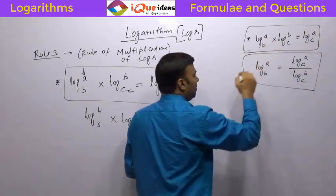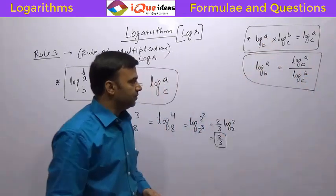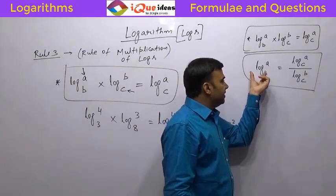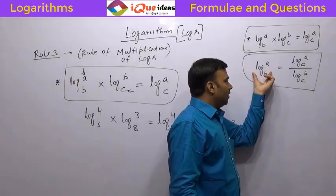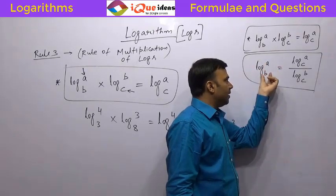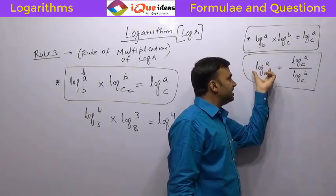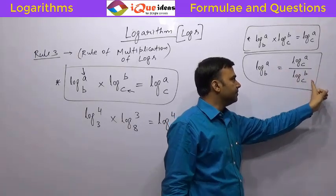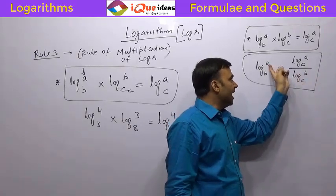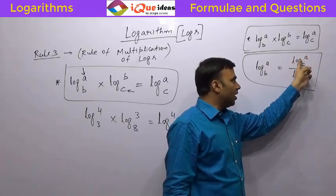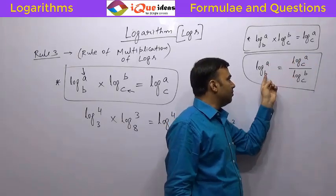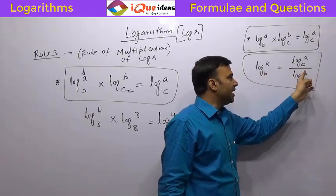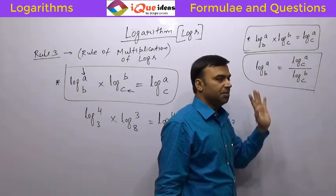How do you remember this? If there is a log which combines a number and a base, they can be separated by introducing a third number C. Then A becomes the number in the log in the numerator, B becomes the number of the log in the denominator, and C becomes the base in both places.